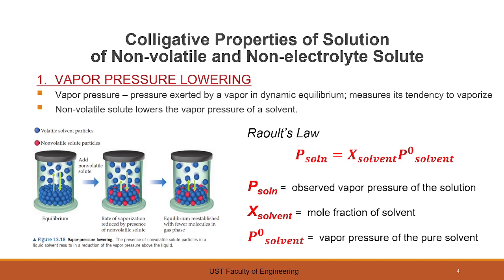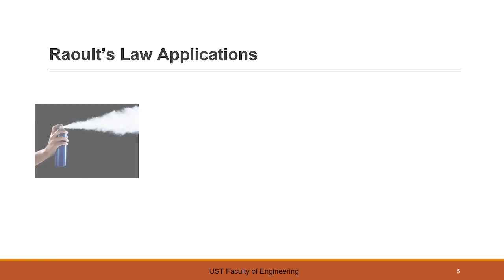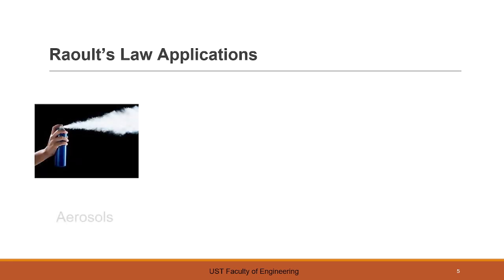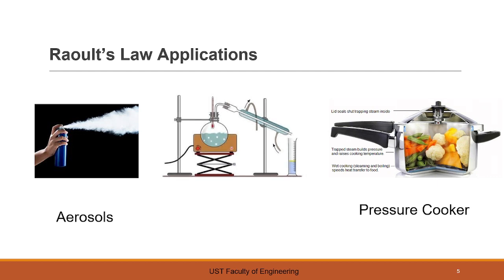The observed vapor pressure of the solution is equal to the mole fraction of the solvent multiplied by the vapor pressure of the pure solvent. Raoult's law applications include aerosols, the pressure cooker, the mechanism of pressure cooking, and distillation.